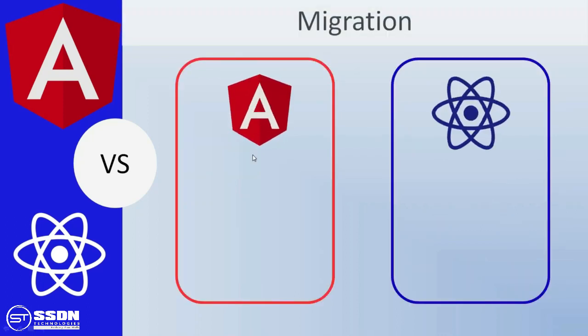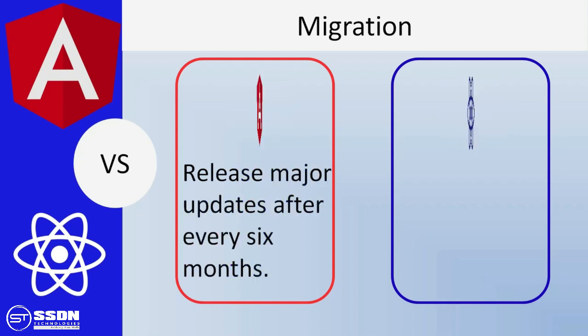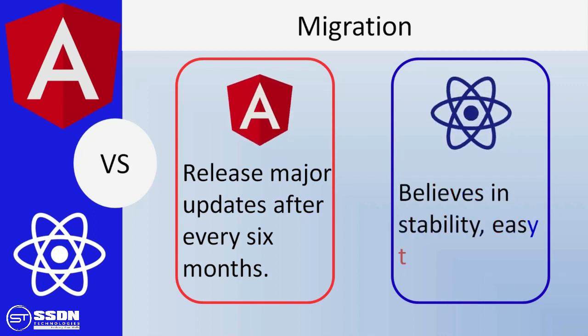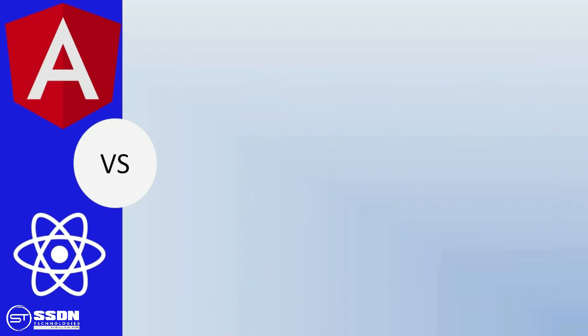Migration from one version to another can be a trouble for developers. Angular usually releases major updates every 6 months. Also, there is a period of another 6 months before any major APIs are deprecated. It ultimately means developers have two release cycles of 6 months to make changes. React believes in stability so it is quite easier for developers to migrate from one version to another.